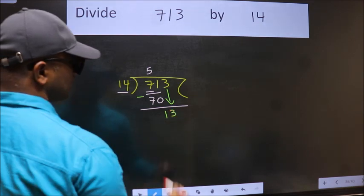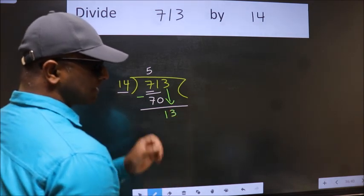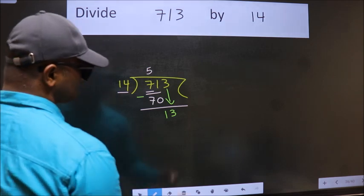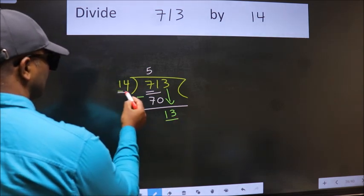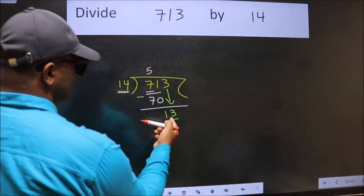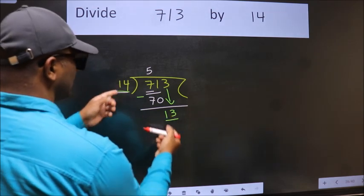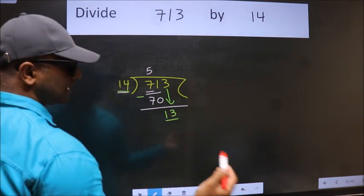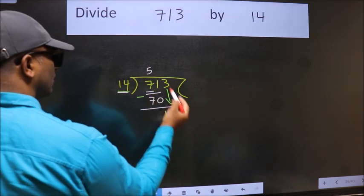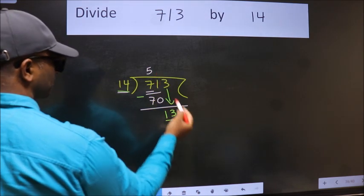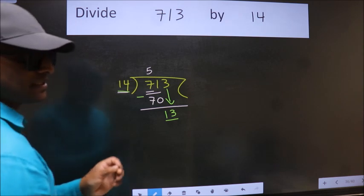After this step, the mistake happens. And the mistake is this. Here we have 13. Here 14. 13 is smaller than 14. So what many do is they directly put dot, take 0, which is wrong.